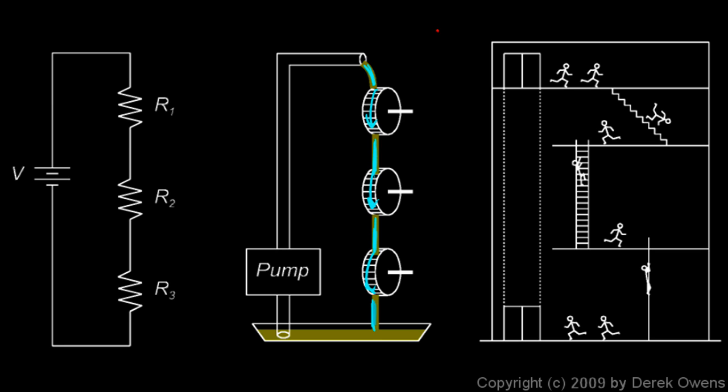Now think about the building, and think about a similar concept. The people are given potential energy by the elevator, and when they come down, they lose that potential energy, and they lose some of their potential energy, but not all, some of it going down the stairs, and they lose some of it going down the ladder, and they lose some of it sliding down the pole.